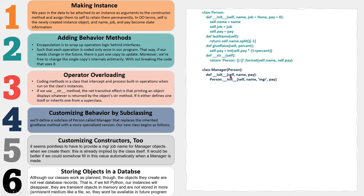The manager class will have its own customized constructor that takes only two parameters: name and pay. After the colon we put person.__init__, so we are taking the Person class constructor and customizing one of the parameters - the job parameter - by directly giving it MGR. That gives us our customized constructor for the manager subclass. We will also define a customized giveRise method.